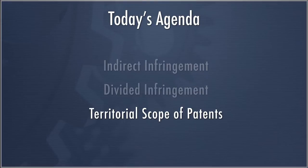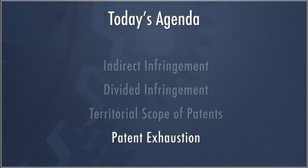Then we're going to talk about the Territorial Scope of Patents. Similar to Divided Infringement, this interacts with the indirect infringement concept to determine how patents can be infringed even if part of them are used in the U.S. and part of them not in the U.S. And then we're going to talk about patent exhaustion, which is the limits of patent infringement. When you sell a device that's embodied by a patent, you are said to have exhausted the patent.